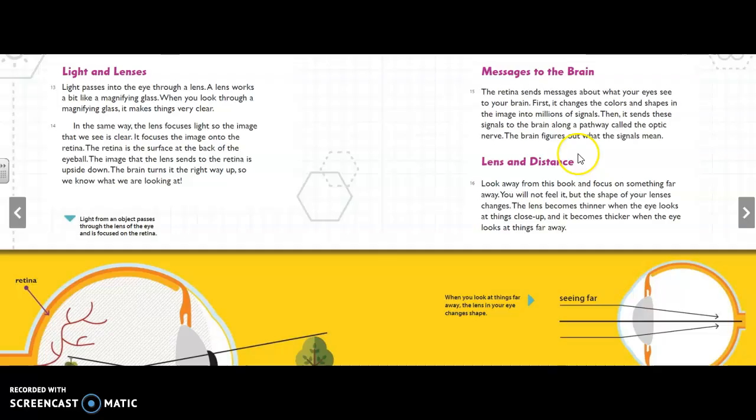Our last subheading on this page, lens and distance. Look away from this book and focus on something far away. You will not feel it, but the shape of your lenses changes. The lens becomes thinner when the eye looks at things close up and it becomes thicker when the eye looks at things far away.